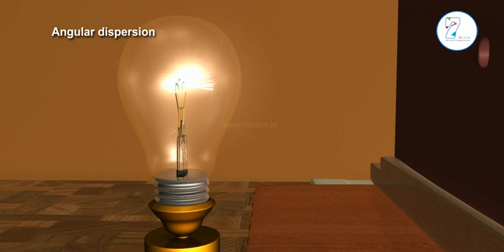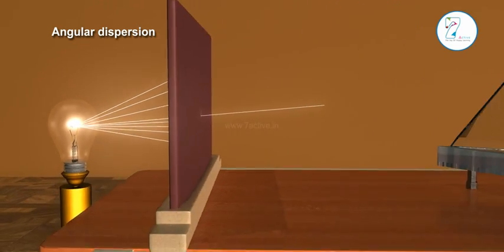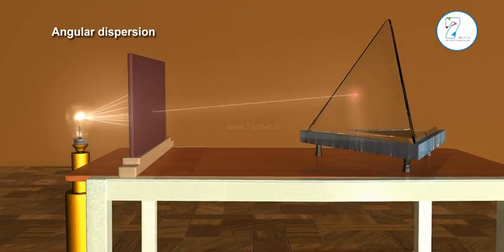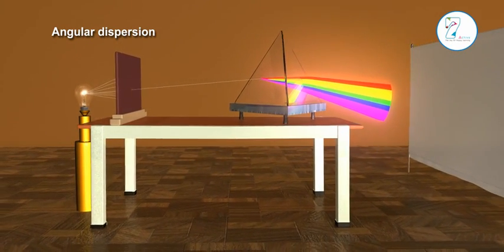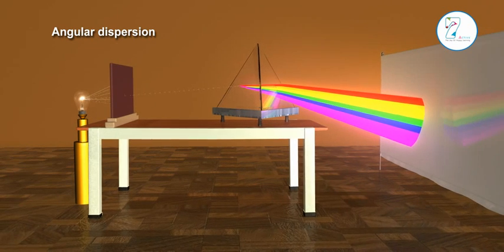Angular dispersion: The angular separation between the two extreme colors, that is violet and red color, when beam of white light passes through a prism, is called angular dispersion.